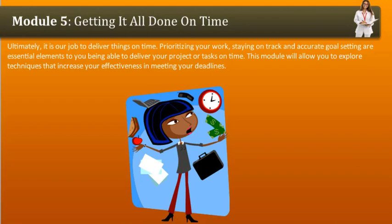Module 5: Getting It All Done on Time. Ultimately, it is our job to deliver things on time. Prioritizing your work, staying on track, and accurate goal setting are essential elements to being able to deliver your project or tasks on time. This module will allow you to explore techniques that increase your effectiveness in meeting your deadlines.